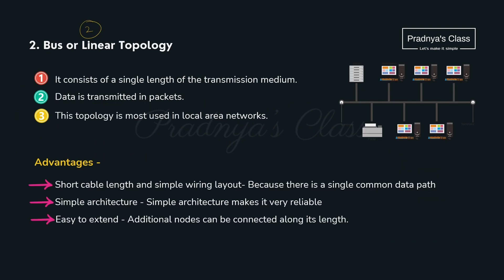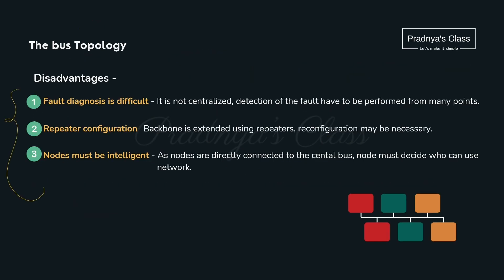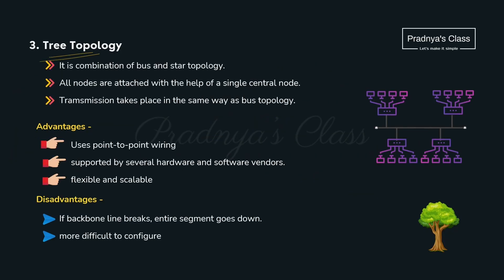The second topology is bus, also called linear topology. There is a single length of transmission media through which data transfers in the form of packets. It is generally used in LAN. Advantages: short cable length due to a single common transmission line, simple architecture, and easy to extend. Disadvantages: fault diagnosis is difficult as it is not centralized; repeaters must be reconfigured every time a node is added; and nodes must decide who can use the network since they are all connected to the central bus.